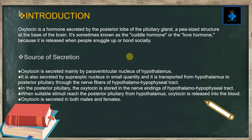Oxytocin is also secreted by the supraoptic nucleus in small quantity. It is transported from the hypothalamus to the posterior pituitary through the nerve fibers of the hypothalamo-hypophysial tract. In the posterior pituitary, oxytocin is stored in the nerve endings of the hypothalamo-hypophysial tract. When suitable stimuli reach the posterior pituitary from the hypothalamus, oxytocin is released into the blood.